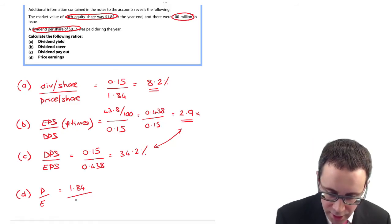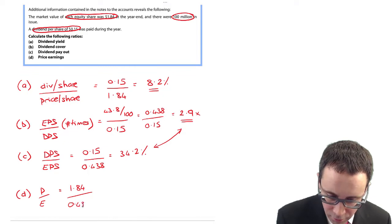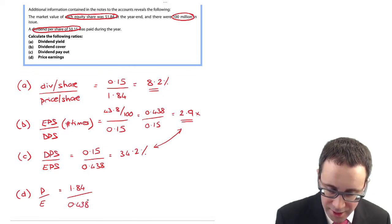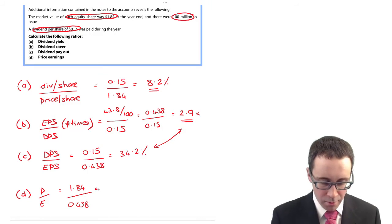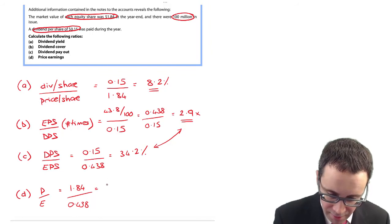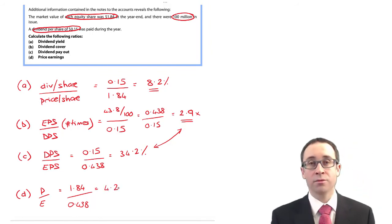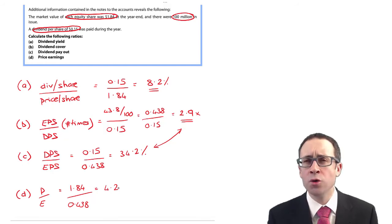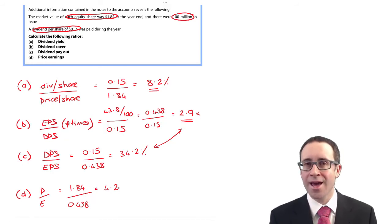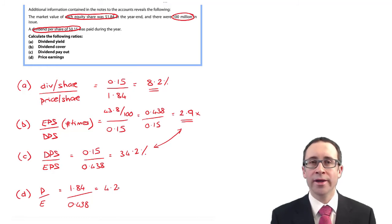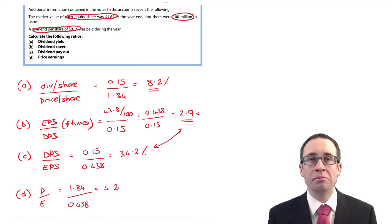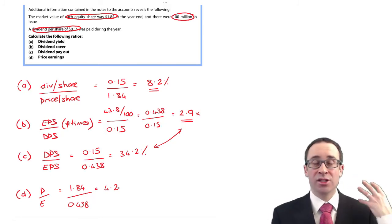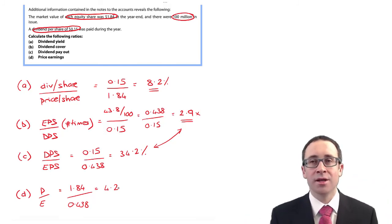And then what you've got is your earnings per share. There we know is 0.438. So 1.84 divided by 0.438. Does that give me 4.2? So an investor is currently prepared to pay 4.2 times the current level of earnings to get those historic earnings. Clearly, 4.2, we need a comparison, either an historic comparison or a comparison to a competitor to see whether or not we think it is doing better than other businesses or better than what it has done in the past.